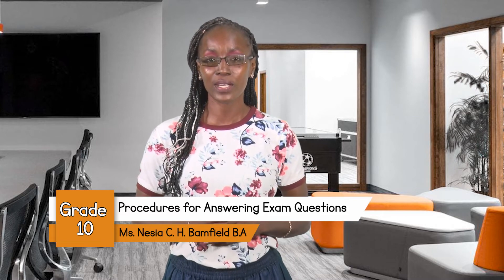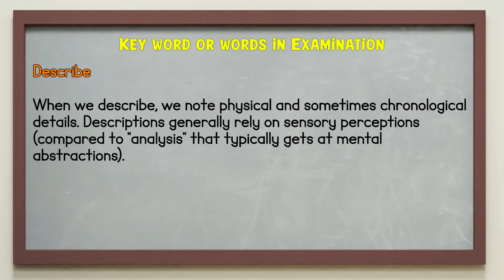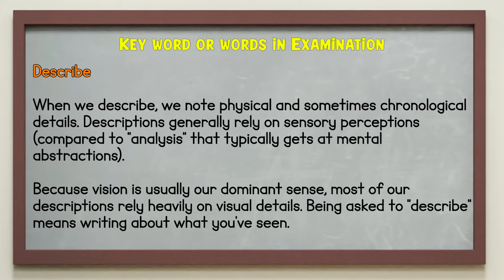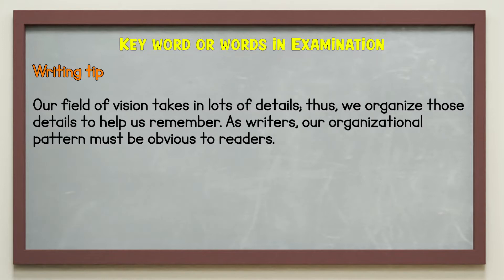Let us begin with describe. When we describe, we note physical and sometimes chronological details. Descriptions generally rely on sensory perceptions compared to analysis that typically gets at mental abstractions. Because vision is usually our dominant sense, most of our descriptions rely heavily on visual details. Being asked to describe means writing about what you've seen. Writing tip: our field of vision takes in lots of details, thus we organize those details to help remember.